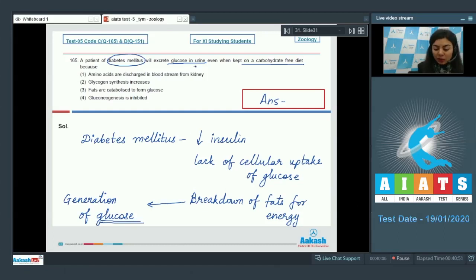This breakdown of fats is for the generation of glucose. The glucose that is detected in the urine is due to breakdown of fats because fats are catabolized to form glucose. The correct answer here would be option number three, fats are catabolized to form glucose. Amino acids being discharged from kidney is incorrect, glycogen synthesis increases is incorrect as this is the storage form, and gluconeogenesis is inhibited is incorrect because glucose is being generated here.